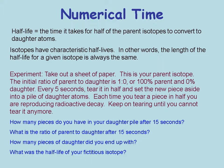A way to think about half-life: take a sheet of paper and rip it in half. Every five seconds, take that remaining half, rip it again, and set the piece aside. After 15 seconds you've done three rips. How many pieces do you have in your daughter pile? Five pieces. So the ratio of parent to daughter after 15 seconds is one to five. And the half-life of this fictitious isotope was five seconds, because every five seconds we ripped a piece of paper.